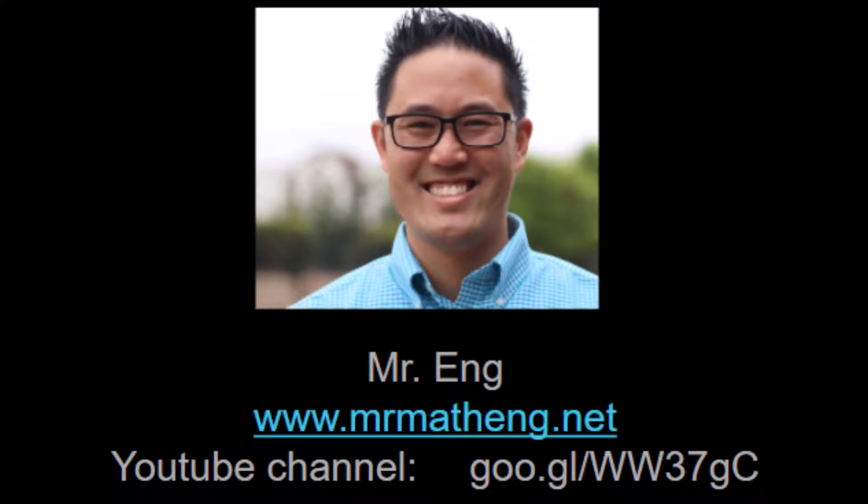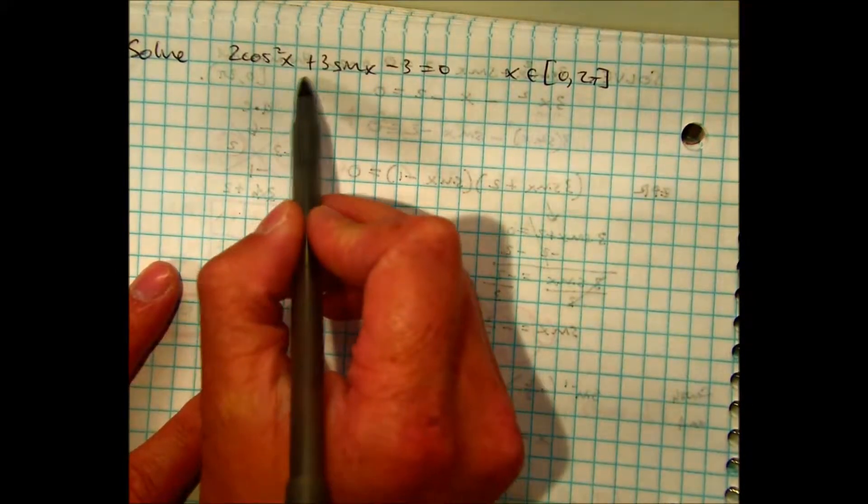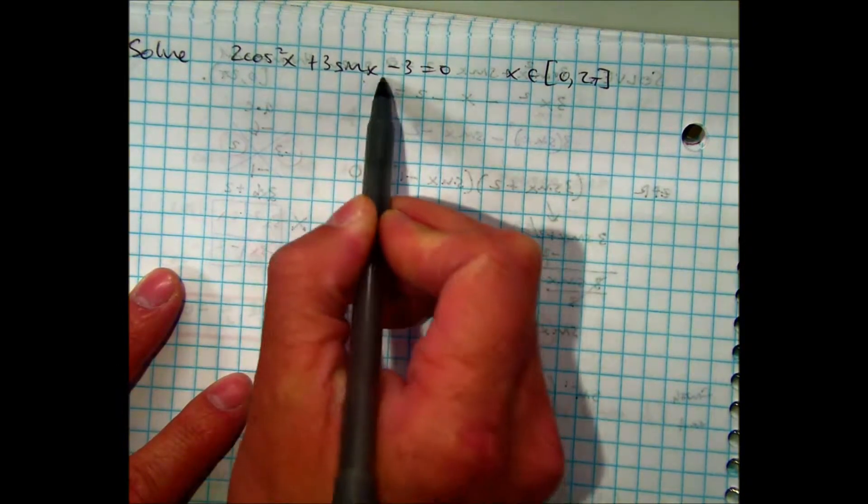Hello, man. What's wrong with you? Solve 2 cosine x plus 3 sine x minus 3 equals 0.